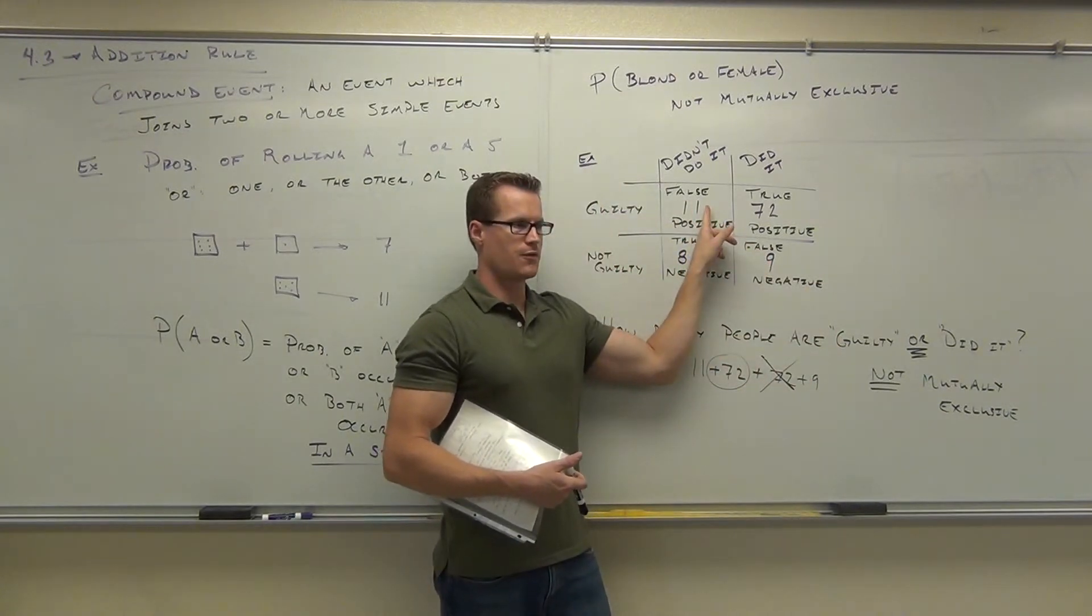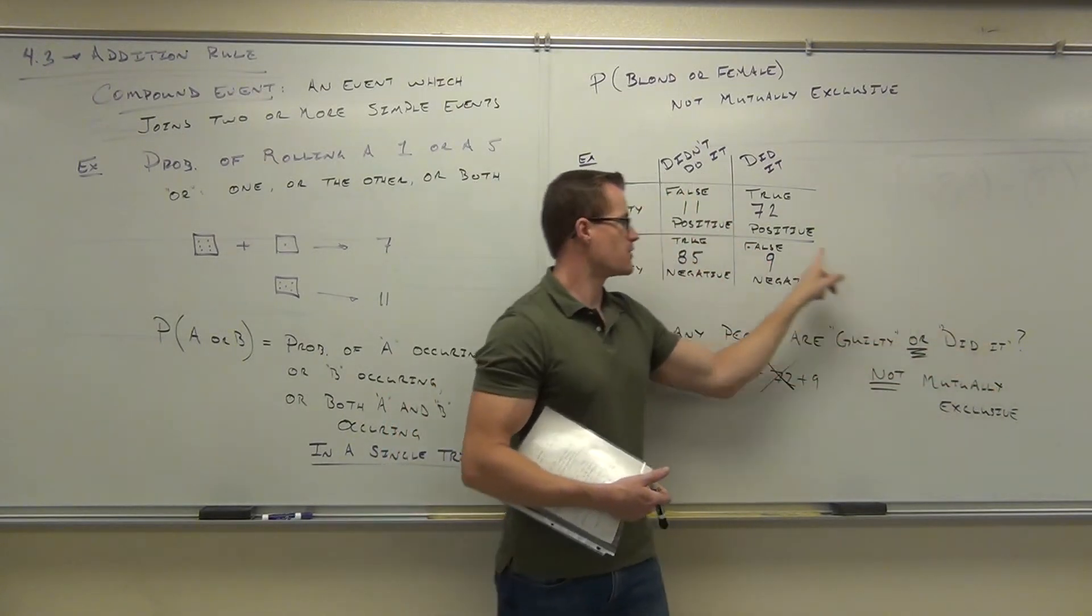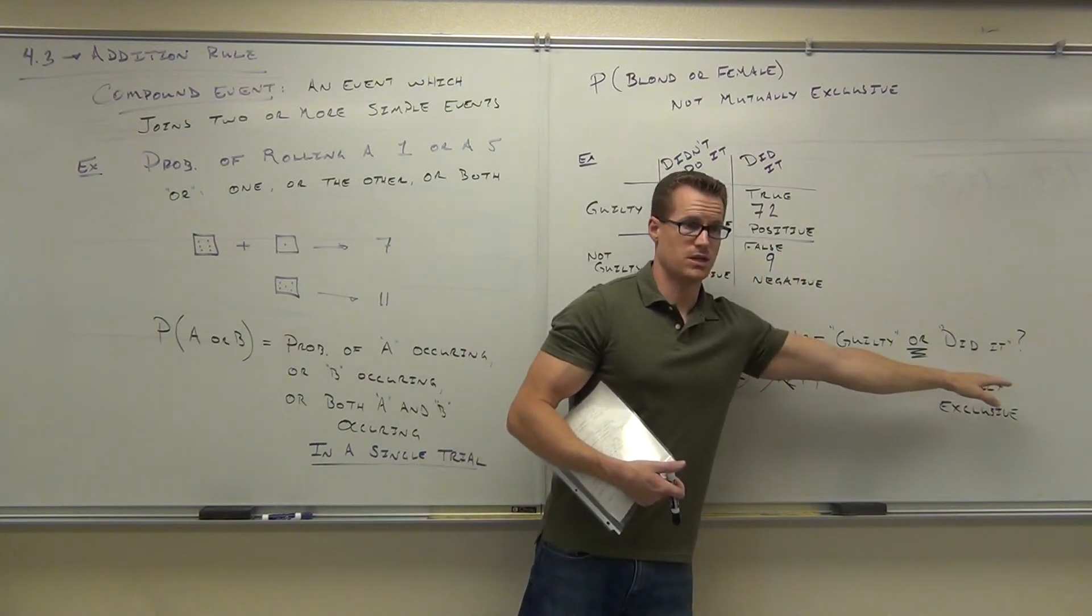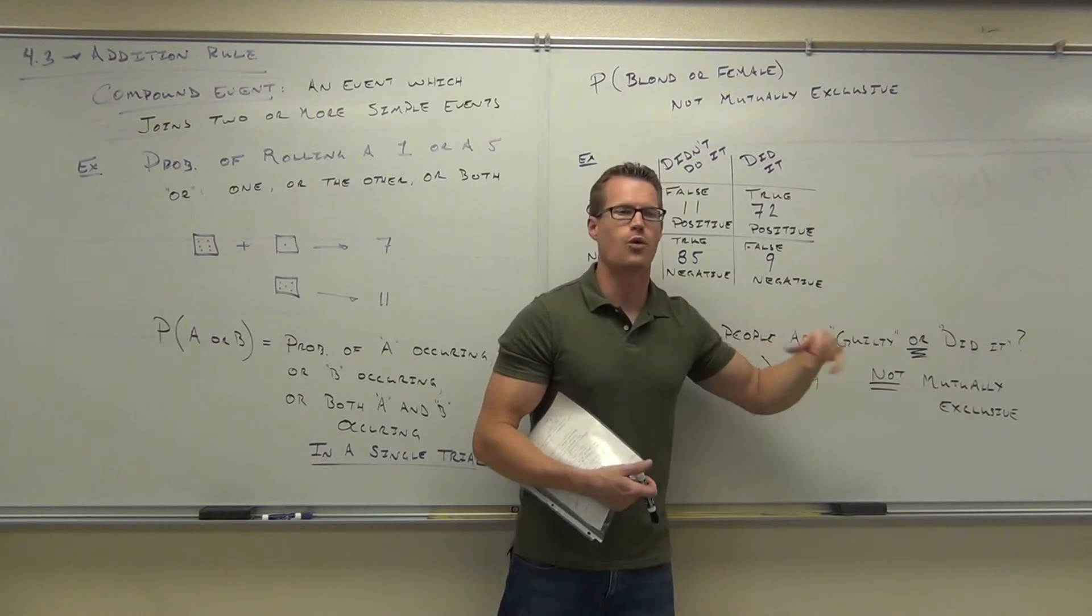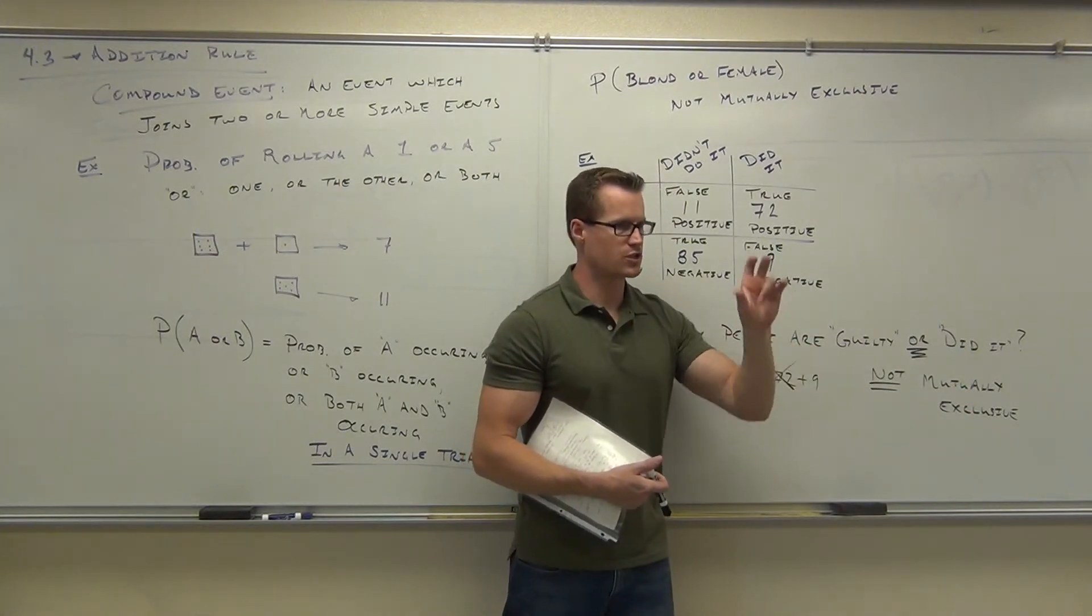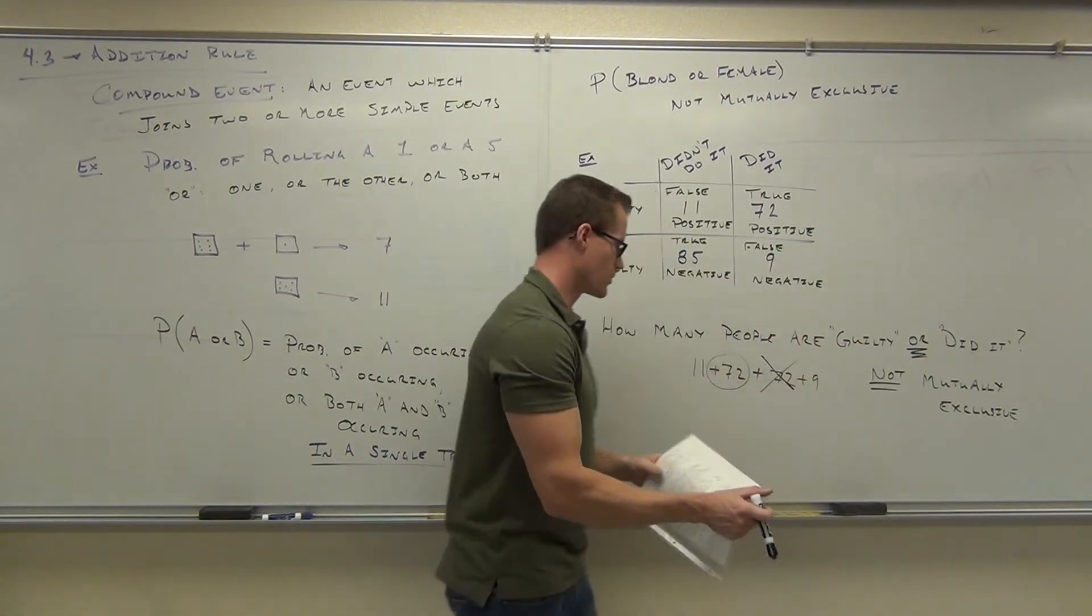So if you're here, do you fall in this case? Yes, you're guilty. If you're here, do you fall in this case? Yeah, you did it. If you're here, do you fall in this case? Absolutely, you're both. You're both of them. But for or, you don't need to be both. Just fall in one of them. So let's ask the question one more time. How many people are guilty or did it or both? Here's guilty. Here's did it. Here's both.